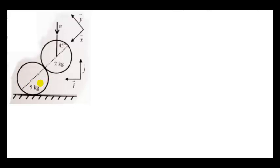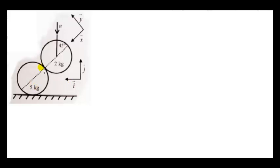Since the five kilogram mass moves entirely in the horizontal direction, it's convenient to use a set of axes where one of the axes is in the horizontal direction. So we have a set of i,j axes here.